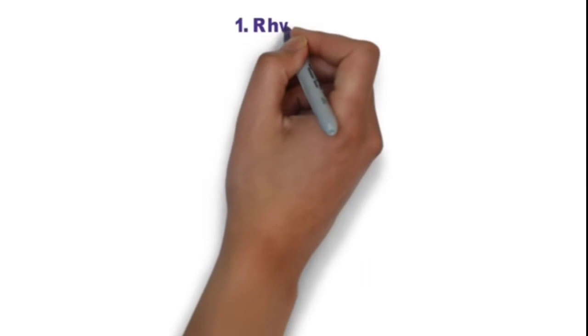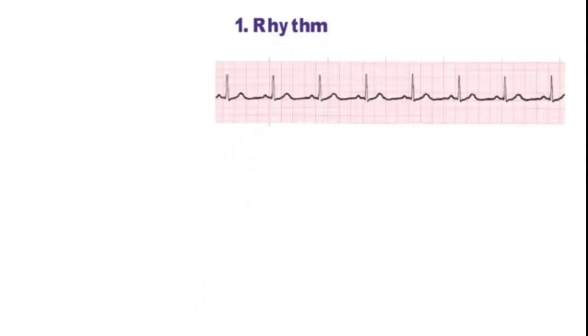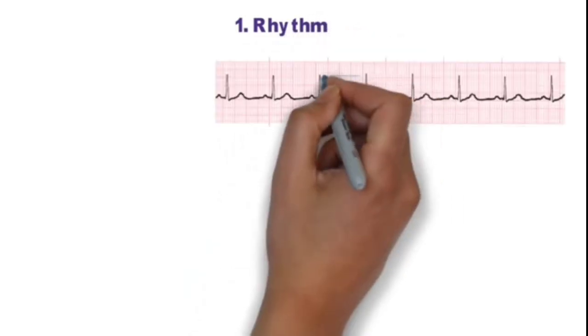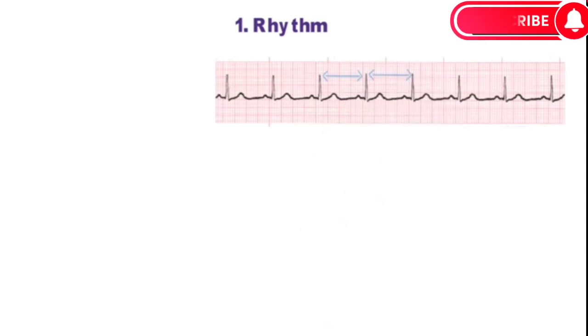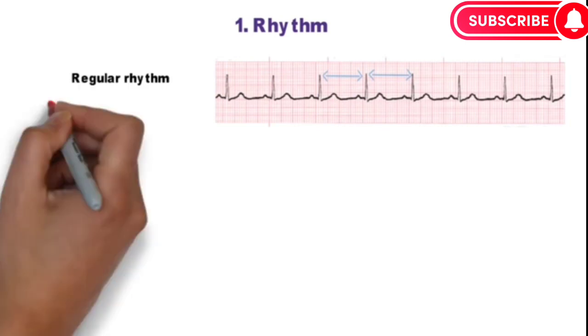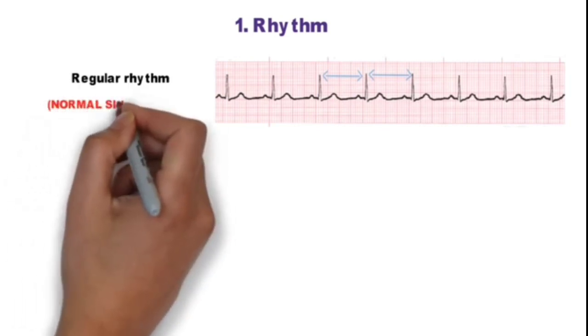First step is to check the rhythm. We check RR interval - as in this ECG, RR intervals are equal and there is a P wave before every QRS complex. So this is a normal sinus rhythm.